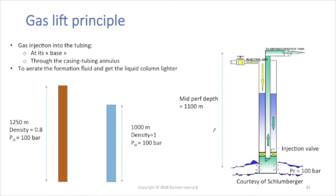Now if I start to inject gas at the bottom of my well to aerate my fluids and reduce its density, and if by doing that I can reduce the density to 0.8, then to get 100 bar of hydrostatic pressure, I will need a column of 1250 meters.